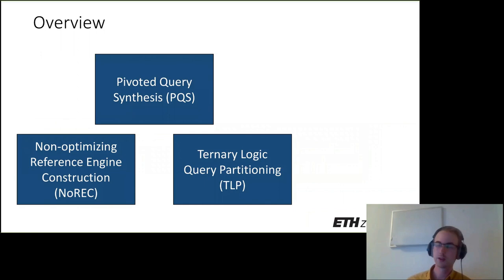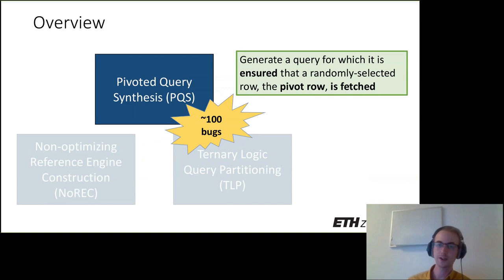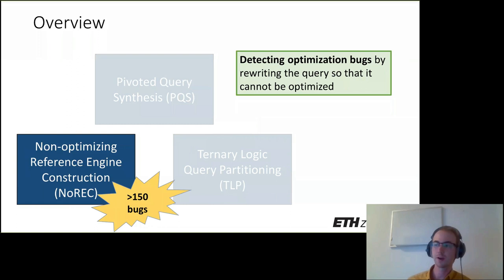We have been working on three new practical approaches for finding logic bugs: namely Pivoted Query Synthesis (PQS), Non-Optimizing Reference Engine Construction (NOREC), and Ternary Logic Partitioning (TLP). Pivoted Query Synthesis was our first approach — we found about 100 bugs using it. The core idea is to generate a query for which it is ensured that it fetches a randomly selected row, which we refer to as the pivot row. If the pivot row is not in the results, we've detected a bug.